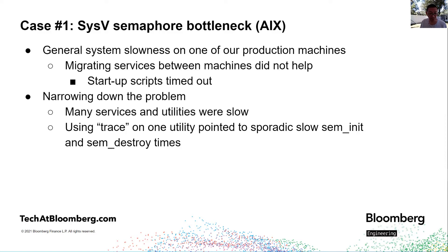This first problem occurred on AIX on production machines where general system slowness was observed. Our common strategy to differentiate between workload and machine state is to migrate the load from one machine in a cluster to another. In this case the slowness traveled with the load. To narrow down the problem, we used the AIX trace utility — analogous to truss on Solaris and strace on Linux — to identify sporadic sem_init and sem_destroy times as a big source of latency. It took us a couple of days from detection of slowness to identifying semaphore create and destroy operations as a suspect.